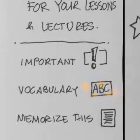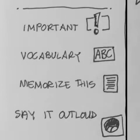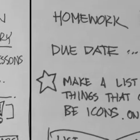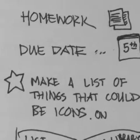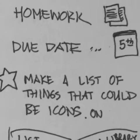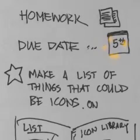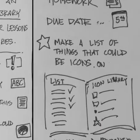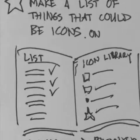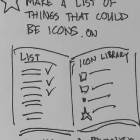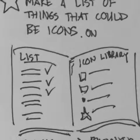Vocabulary — I just created an ABC icon. Memorize this — it looks like a little bit of text. Say it out loud. Homework. You can see there the due date — I just have a little calendar there. So hopefully when you start doing this exercise you're working on making your list.